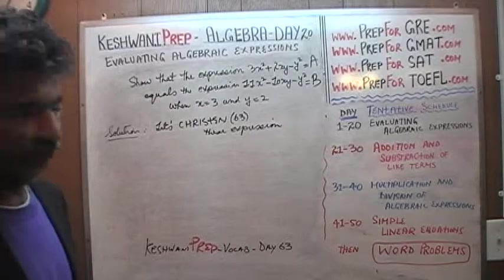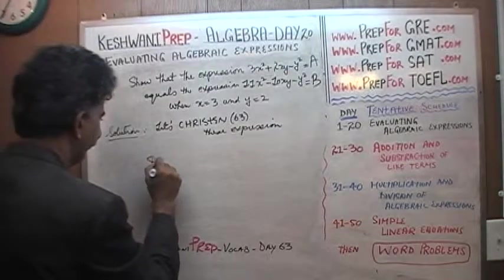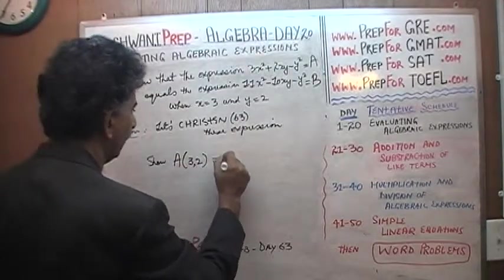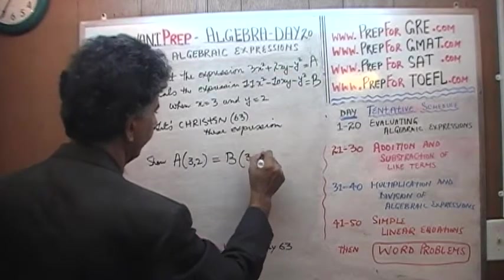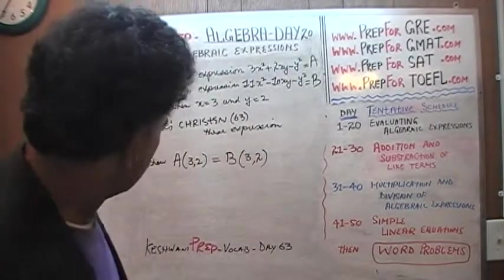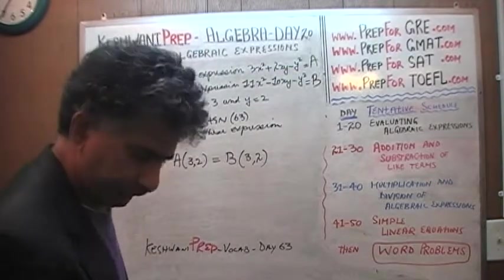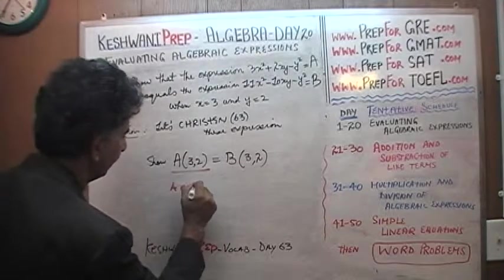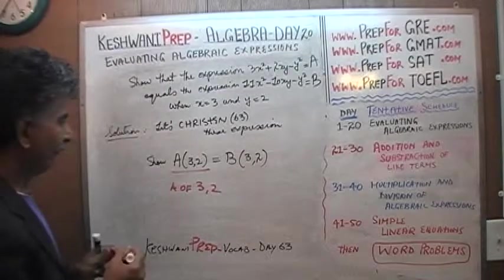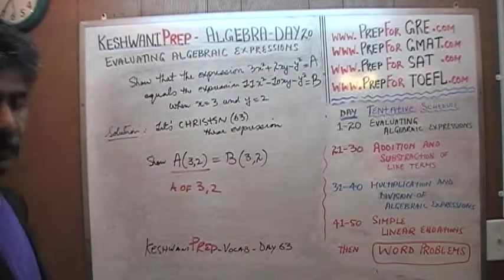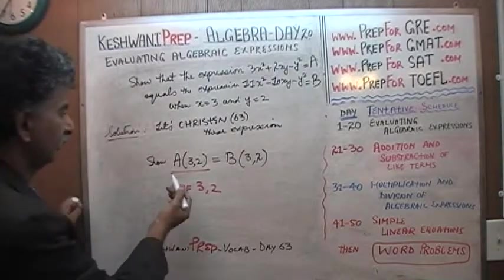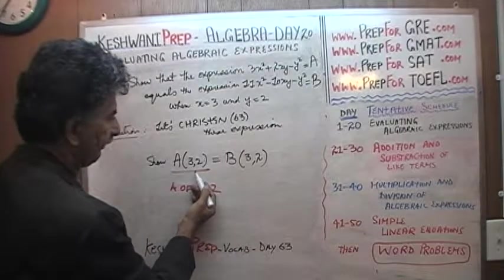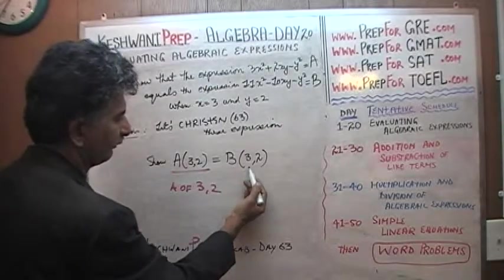How do we write it in mathematical language? We have to show that A of 3, 2 equals B of 3, 2. This part is read as 'A of 3, 2,' which means the value of the expression A when x equals 3 and y equals 2. Our job is to show that value is the same as the value of expression B when x equals 3 and y equals 2.